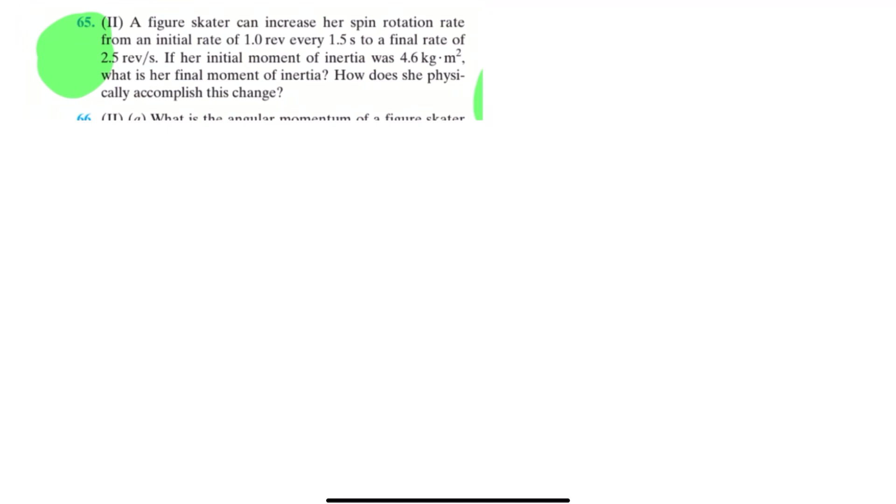We need to always remember that the skater's angular momentum, which is L, is constant because there are no external forces or torques applied to her. It is only her increasing her spin rotation rate by herself, and so there are no external forces or torques being exerted on her.